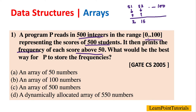Similarly, for 100 marks, say only four students out of 500 scored 100, so it will print 4. The question says we have to print the frequency of scores that are above 50 — that means frequency of score 51, 52, and so on up to 100. Frequency means how many people scored 51 marks, how many scored 52 marks, and so on till 100.